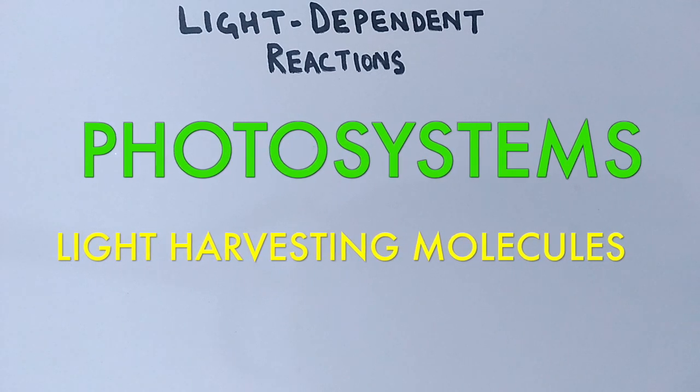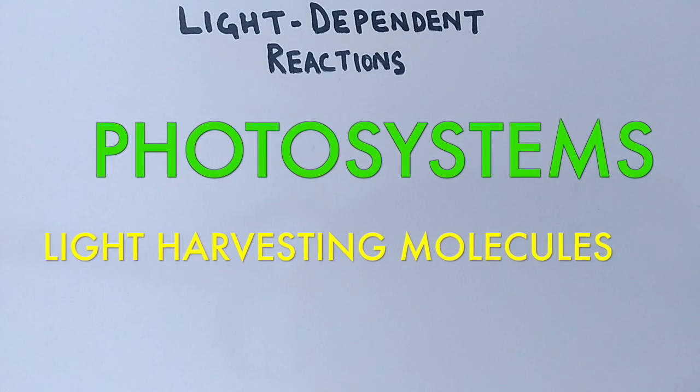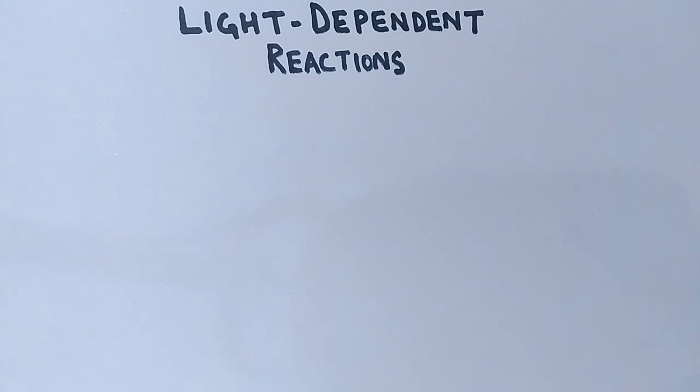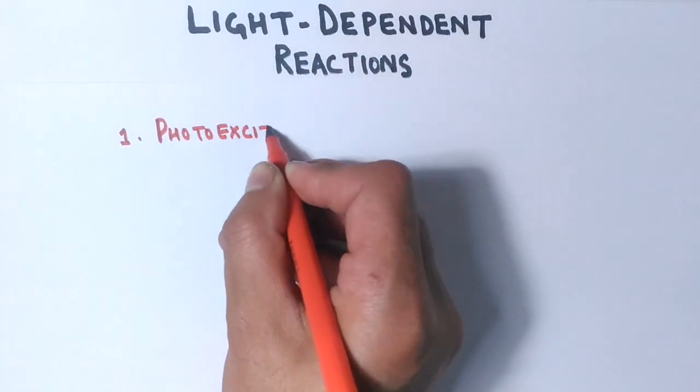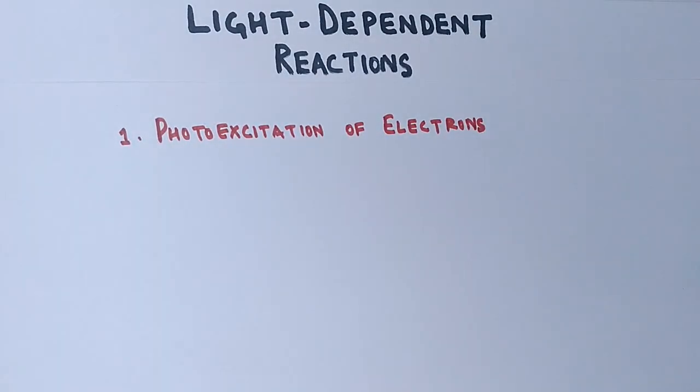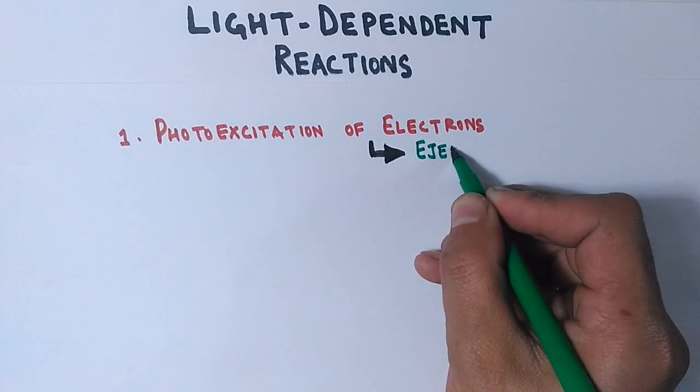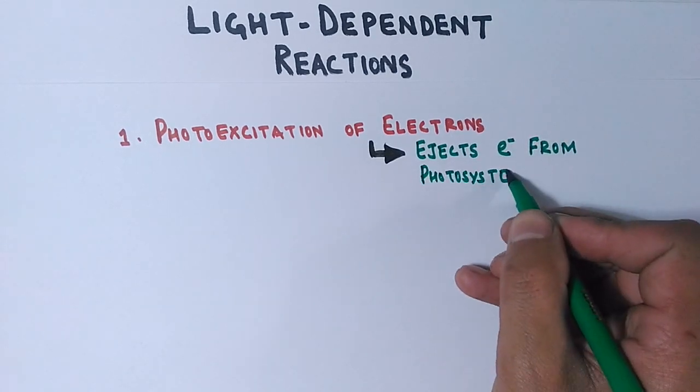Before we jump towards the reactions, let's see the different processes that take place in light-dependent reactions in a sequential manner. The first thing that happens in chlorophyll molecules is the photo-excitation of electrons. When light energy is absorbed by photosystem 2 molecules, it excites the electrons and finally ejects them from the reaction center of photosystem 2.